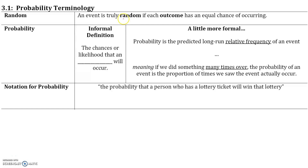An event is truly random if each outcome has an equal chance of occurring. For example, if you flip a coin, the coin can either land on heads or it can land on tails. Each outcome has an equal chance of occurring, therefore flipping a coin is a random event.